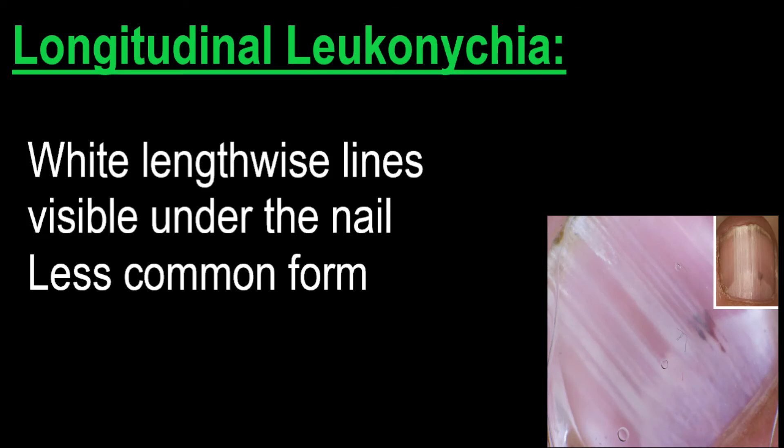The third subtype of leukonychia partialis is longitudinal leukonychia, and this is a rare form. Here, the white lines run vertically from the base to the tip of the nail.